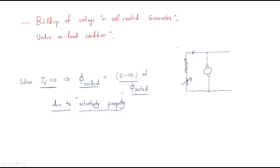For example, at field current zero, assume it will generate 20 volts. If the field resistance is 100 ohms, then 20 volts divided by 100 ohms gives 0.2 amperes of field current. When 0.2 amperes flows, the field current slowly increases to 0.5 amps, and then the generated EMF will become assume 50 volts. The improvement follows the formula: generated EMF = PφNZ / 60A.